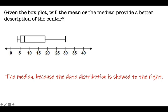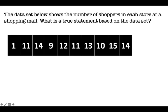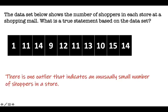Go ahead and hit pause and complete your number one. Okay, for number two, the data set below shows the number of shoppers in each store at a shopping mall. What is a true statement based on the data set below? So you have numbers ranging from one up to 15, and in each box is the store and how many shoppers are in each store. So there is one outlier, which indicates that there's a smaller number in a store. So let's take a look at what outlier would be, what number would be the outlier.